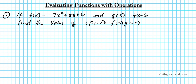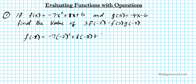So we're going to find the value of f of negative 2. This simply means that you're going to plug in negative 2 into anywhere you have x in f of x. So that's going to look like negative 7 times negative 2 squared plus 8 times negative 2 plus 5.